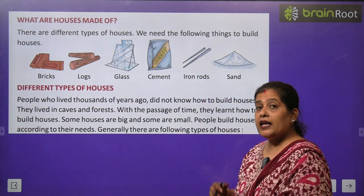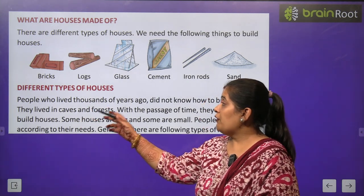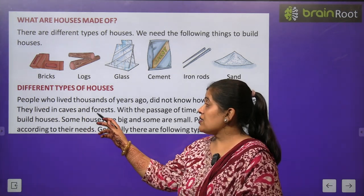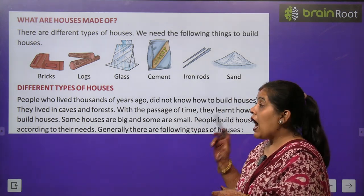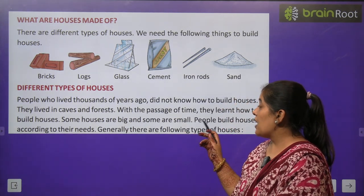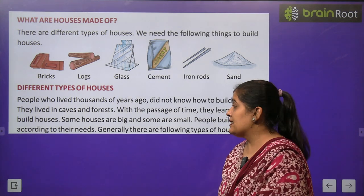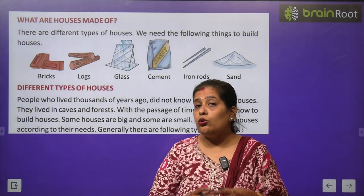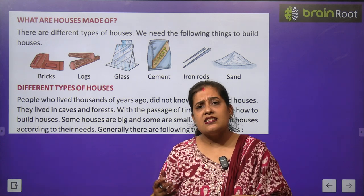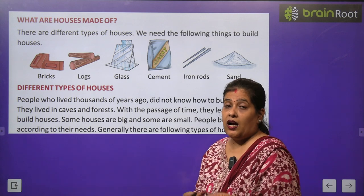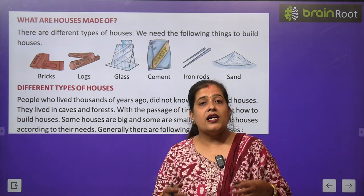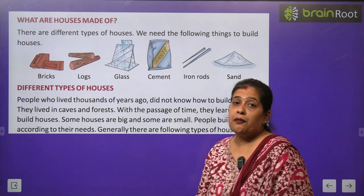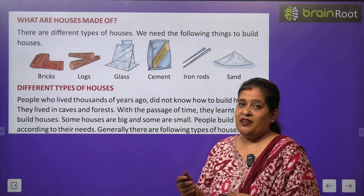Different types of houses. अब हम पढ़ेंगे अलग-अलग तरह के घरों के बारे में. People who lived thousands of years ago did not know how to build houses. They lived in caves and forests. With the passage of time, they learnt how to build houses. Some houses are big and some are small. People build houses according to their needs. आज से हजारों वर्ष पहले लोगों को नहीं पता था कि घर कैसे बनाए जाते हैं. जैसे-जैसे time बढ़ा, उसी तरह लोगों ने घर बनाना सीखा.